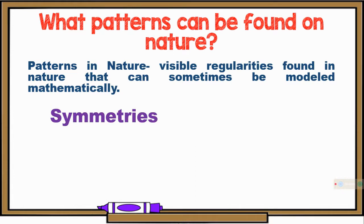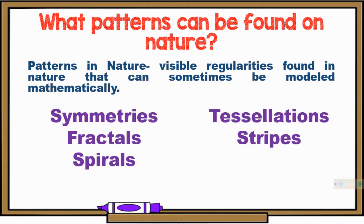Some patterns in nature are symmetries, fractals, spirals, tessellations, and stripes. There are also other kinds of patterns such as waves, cracks, and foams, but we are only going to focus on these five patterns.